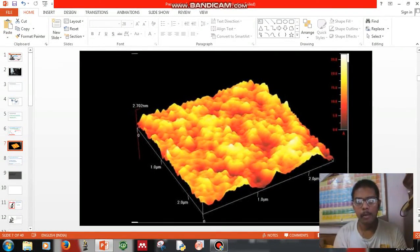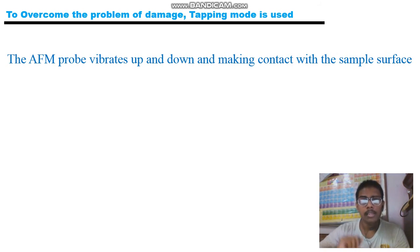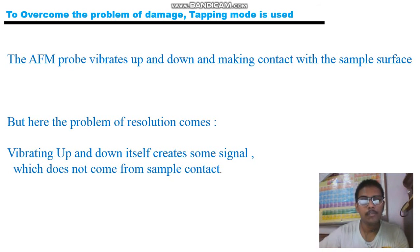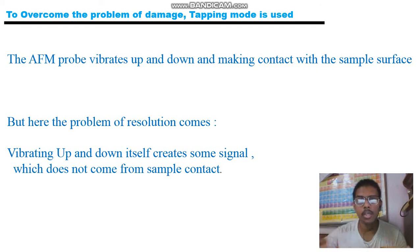To overcome the problem of surface damage, people have proposed tapping mode, where the AFM probe is actually vibrating up and down and not in contact with the surface for a longer time. Thus you can avoid contact with the sample surface for longer periods and avoid damage to your sample. However, one problem is that when the probe goes up and down, it can by itself generate some signal that doesn't come from sample contact with the probe, so there is a chance of false signal generation. In perspective of resolution as well as faithfulness of the sample signal, people prefer the contact mode compared to non-contact mode.